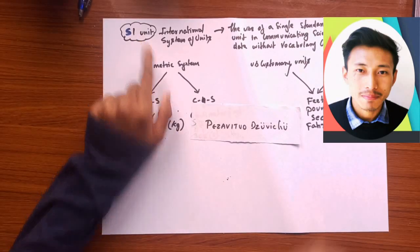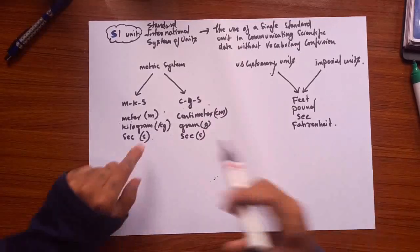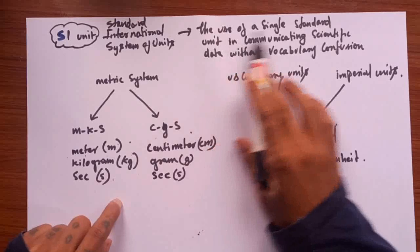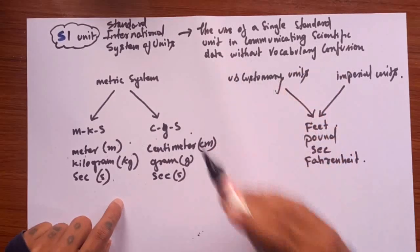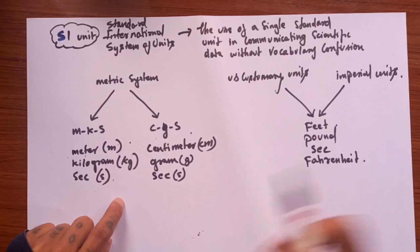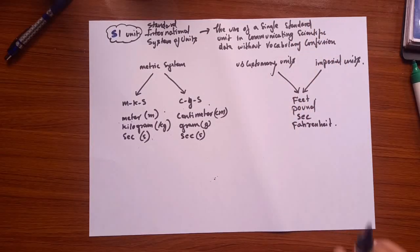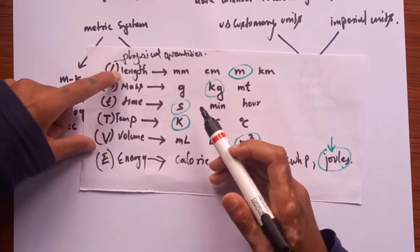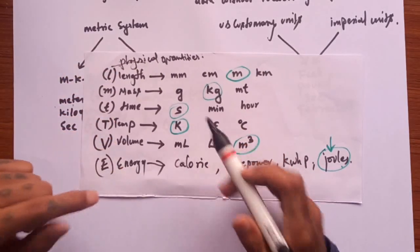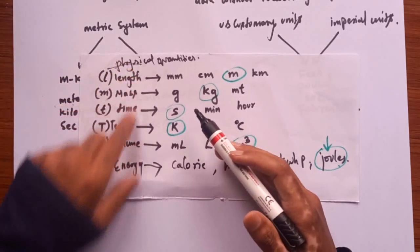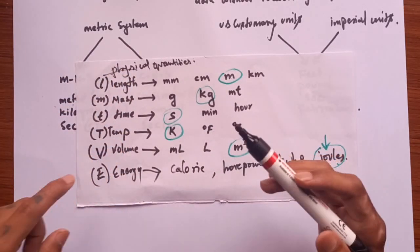The SI unit, or the Standard International System of Units, is the use of a single standard unit in communicating scientific data without any vocabulary confusion. I'll explain this in a minute, but let's get straight to the point. We have physical quantities like length, mass, time, temperature, volume, and energy in our daily basis.